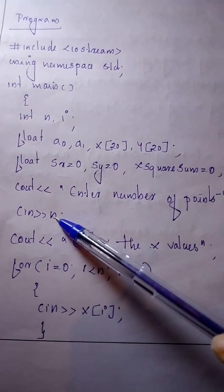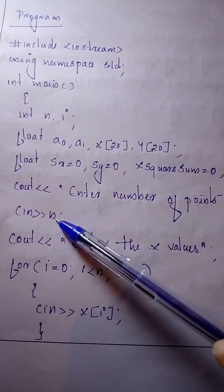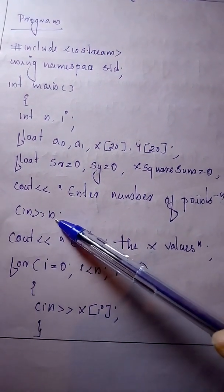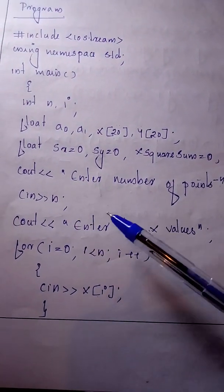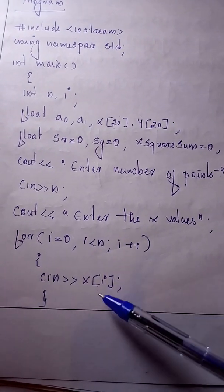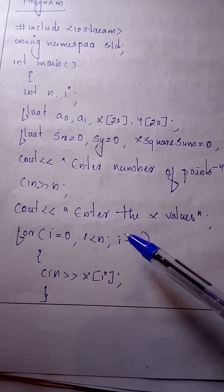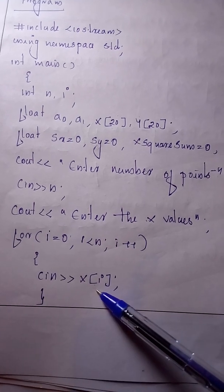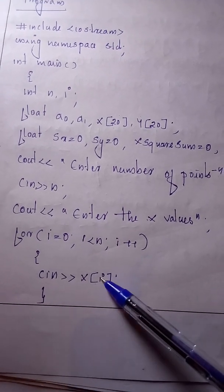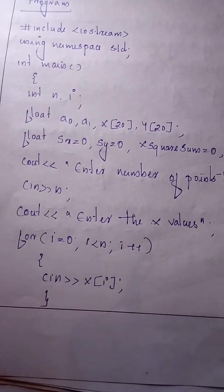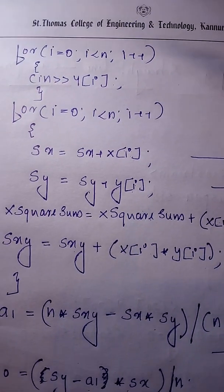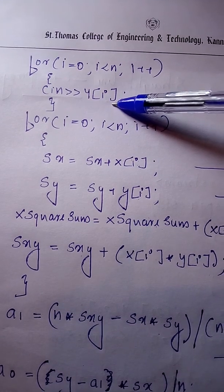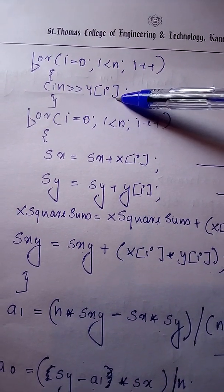First, we read the number of terms n. Then, using a for loop, we read all x values and store them in the x array. A second for loop is used for reading all y values.